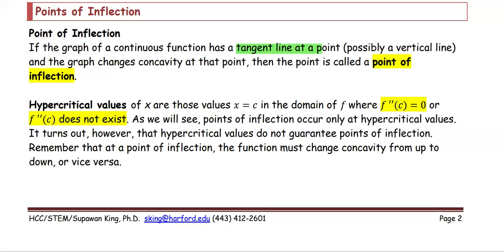Hypercritical values of x are those values x equals c in the domain where f double prime of c equals 0 or f double prime of c doesn't exist.